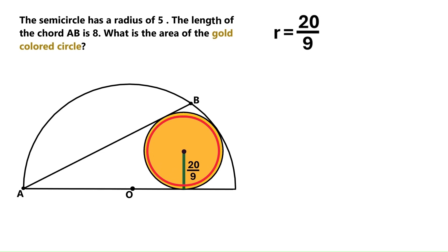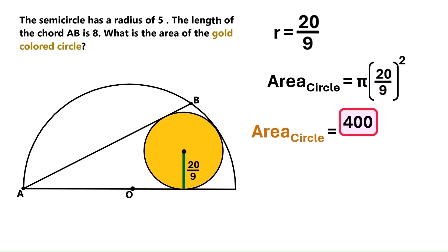Hello people! The area of a circle equals pi times r squared. The radius of this circle is 20 over 9. So we take the square of 20 over 9. 20 squared is 400, 9 squared is 81, and the area of the gold circle is 400 over 81 times pi.